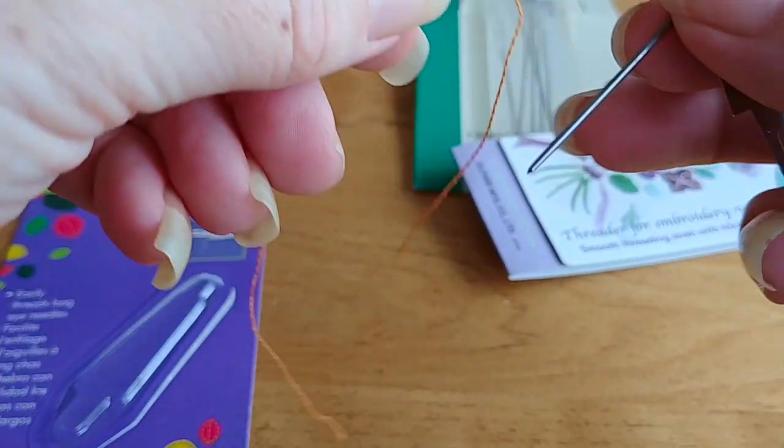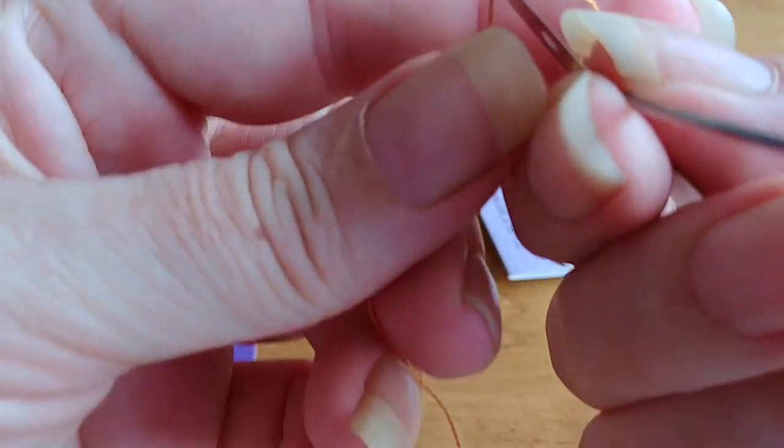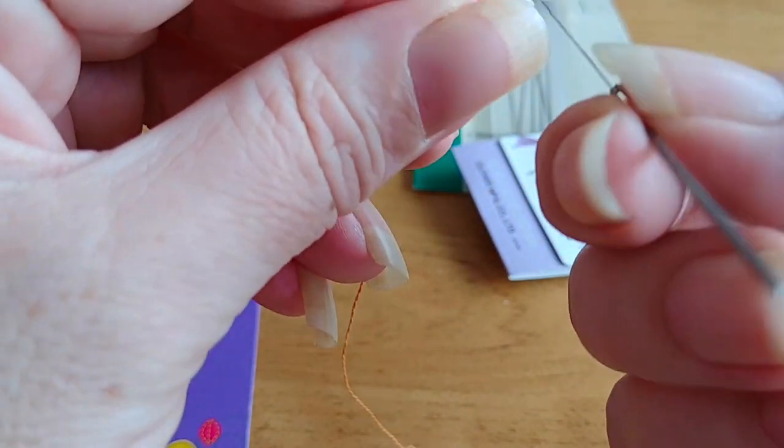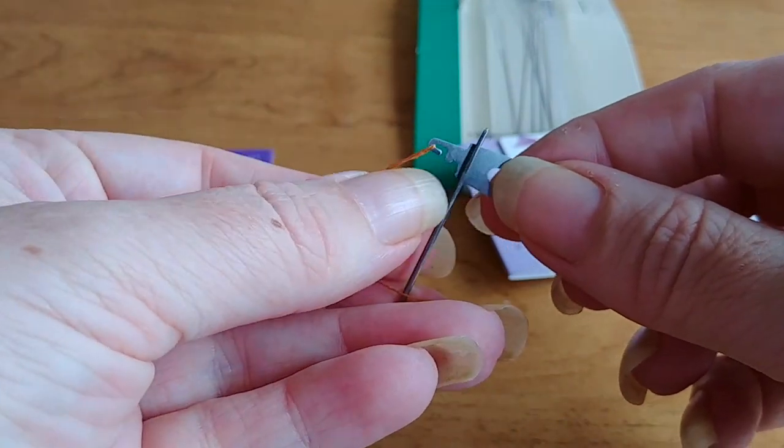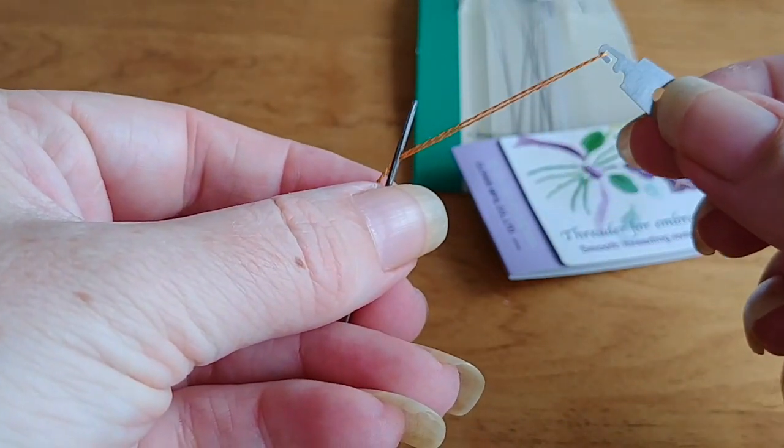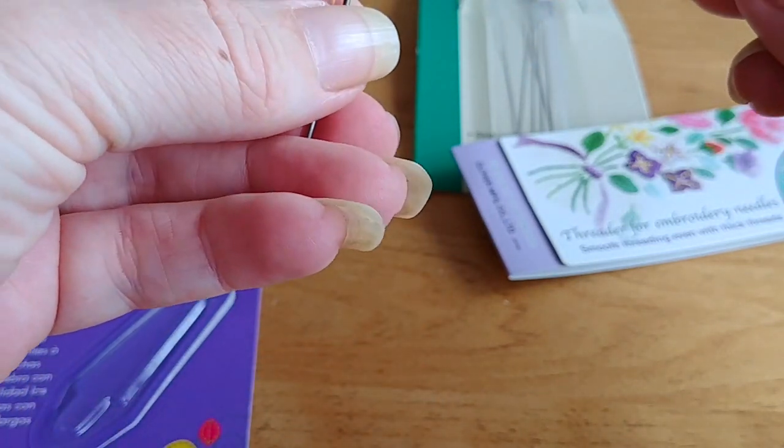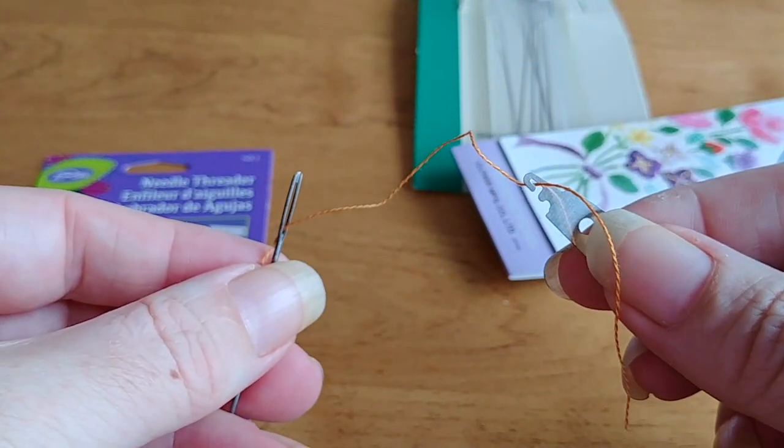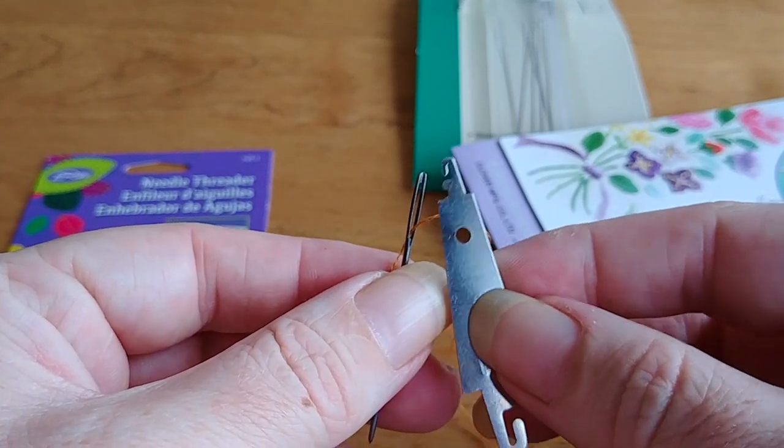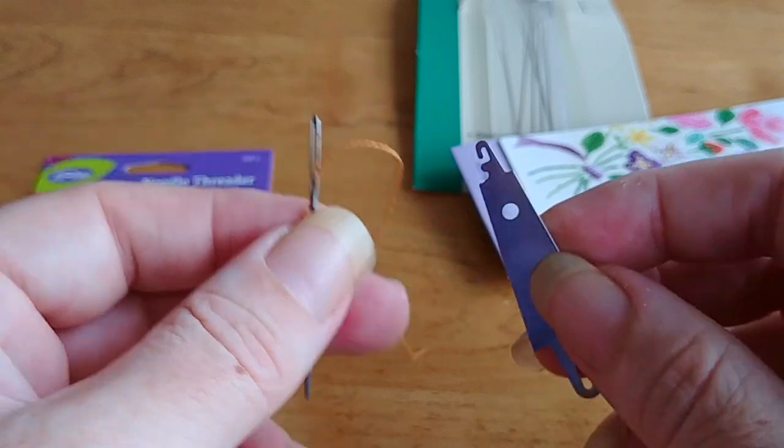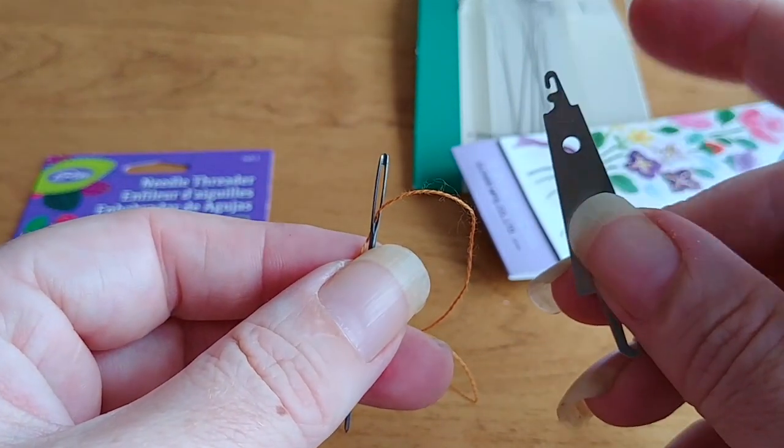So in this case, you get your floss and you just hook it around the little hook like that. Hold your needle, pull it through, and obviously catch one of the other ends so you don't pull it all the way through. And hey presto. So that's actually a really handy one if you're using bigger needles. Like I said, this wouldn't work for something like a beading needle because it's not quite small enough.